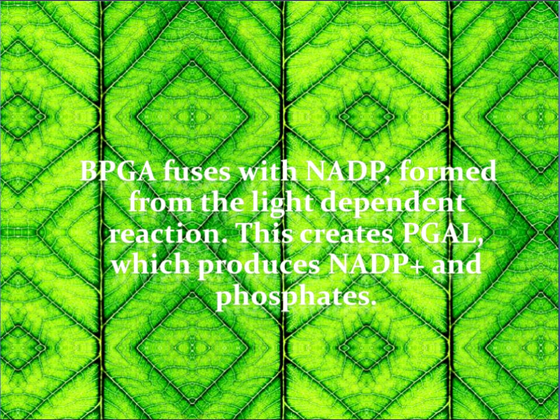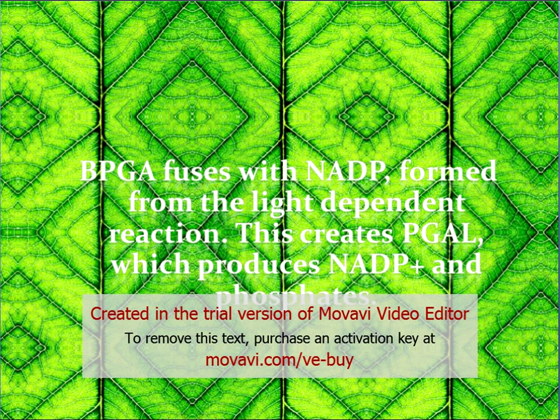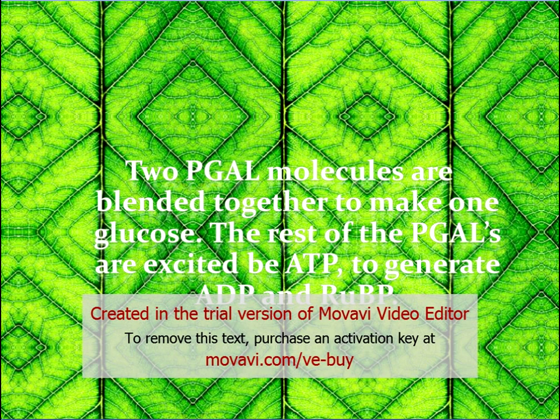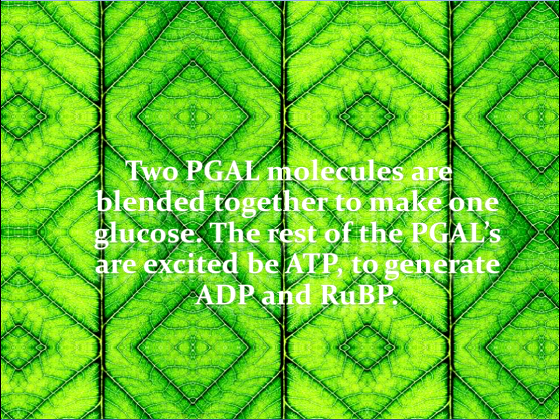This creates PGAL, which produces NADP+ and phosphates. Two PGAL molecules are combined together to make one glucose. The rest of the PGALs are energized by ATP to regenerate ADP and RUBP.